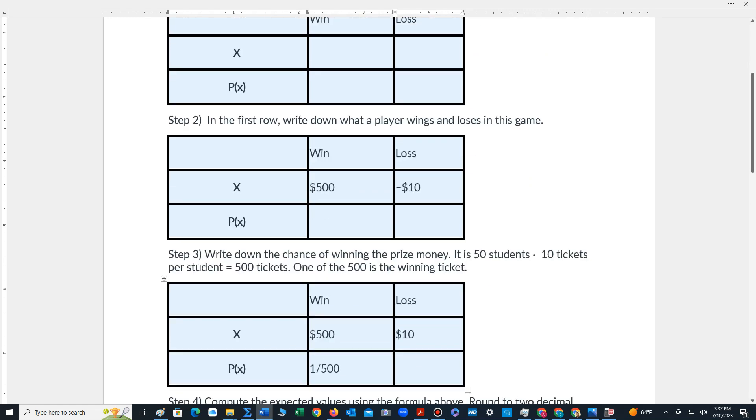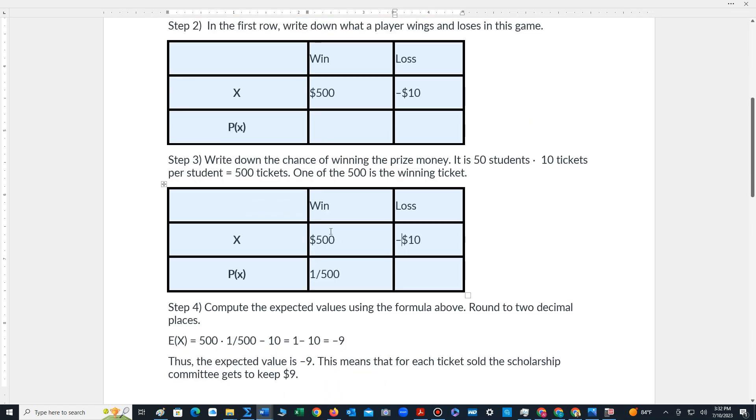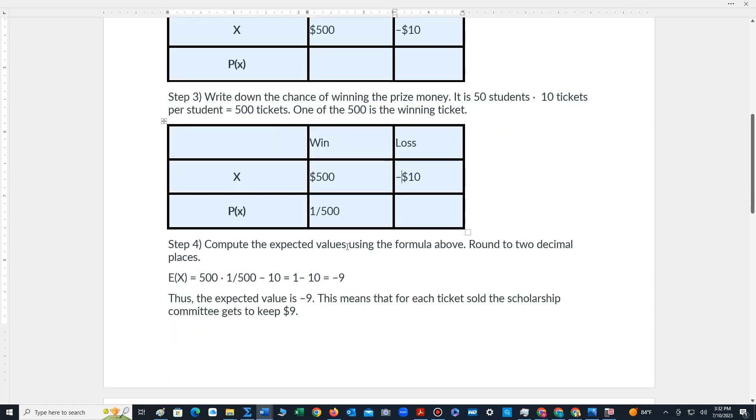Now we have to write down the chance of winning the $500. Well, let's keep in mind that we have 50 students who are selling 10 tickets. So there's 500 tickets that are up for grabs. And let's assume that all tickets are sold. One of those tickets is the winning ticket. So the chance of winning is one out of 500.